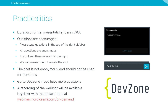Just some quick practicalities before we get started. The duration will be approximately 45 minutes plus a 50 minute Q&A at the end. Questions are encouraged, but please type them in the top of the right sidebar. All questions are anonymous. Try to keep them relevant to the topic. The chat on the bottom right-hand corner is not anonymous and should not be used for questions. If you have more questions after the webinar, feel free to go to DevZone. A recording of the webinar will be available together with a presentation at webinars.nordicsemi.com on-demand after the webinar is complete.